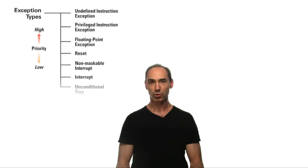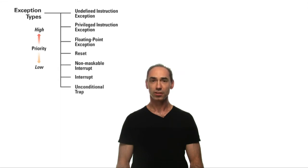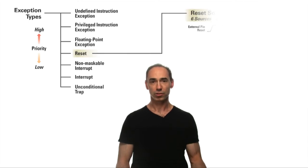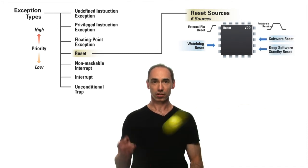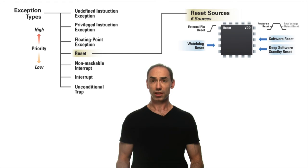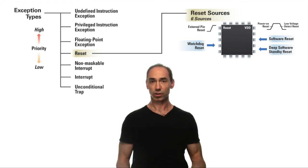As mentioned before, the RX CPU supports seven types of exceptions. Exceptions can come from multiple sources. For example, a reset can be triggered from an external pin, from the watchdog timer, during power up, from software, and it's even possible to configure the low voltage detect circuitry on the RX to trigger a reset.